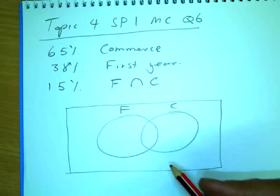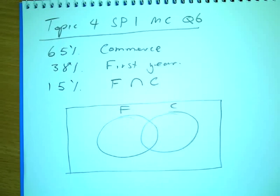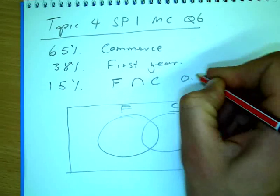Now what number is going to go in the middle there? Well, we want to use decimals really, because that's what we're going to, yeah. So that's going to equal 0.15.